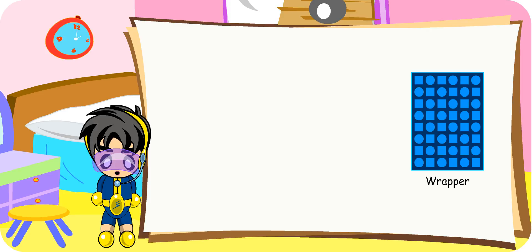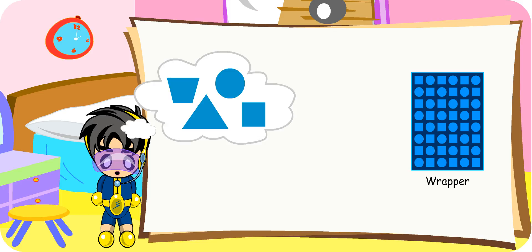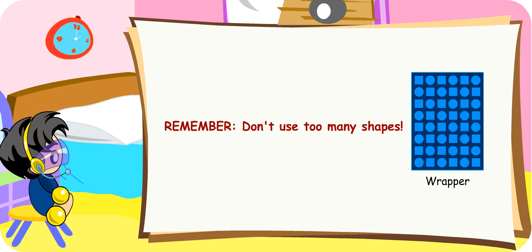We will start with a simple pattern. Firstly, you have to decide on some shapes or pictures you want to use. Remember not to have too many. Since the wrapper has squares and circles on it, we will use circles and squares.